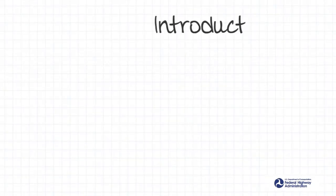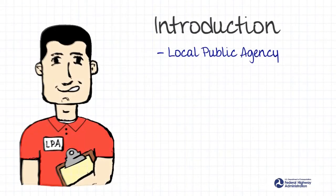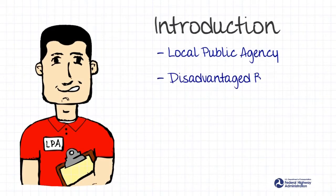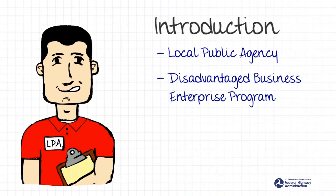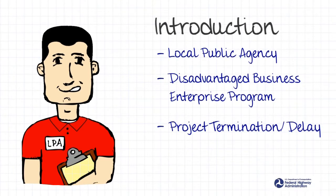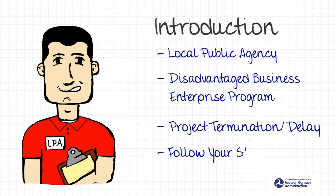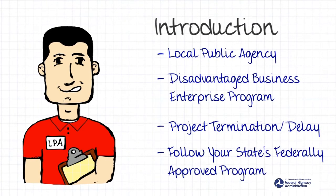If you advertise and award a federal aid contract as a local public agency (LPA), you have the responsibility to manage the Federal Disadvantaged Business Enterprise program requirements. Failure to properly manage the DBE program could lead to project termination or potential delay due to complaints or lawsuits. To avoid this, the Federal Highway Administration requires you to follow your state's federally approved DBE program, where your key responsibility is DBE contract administration.